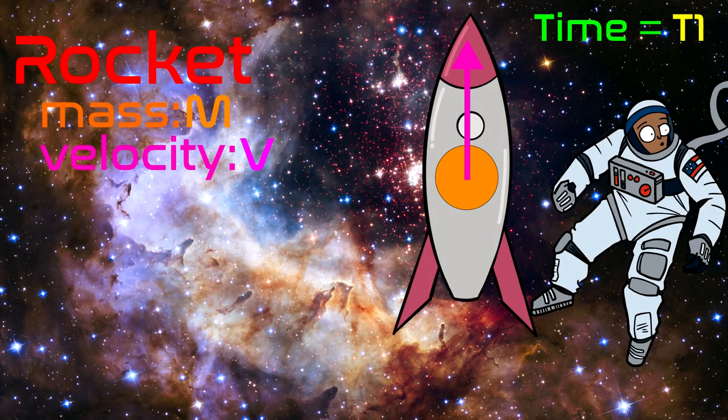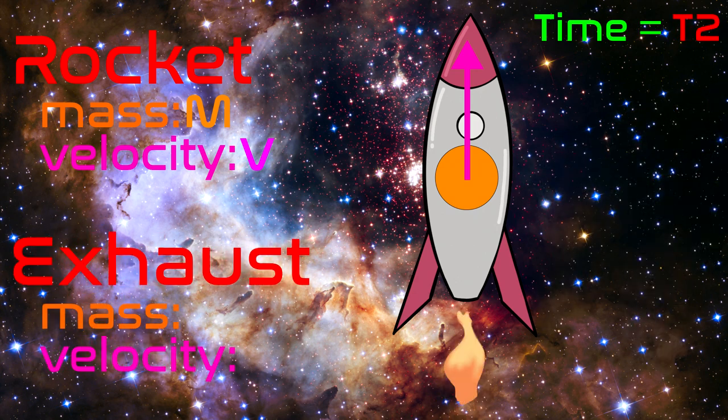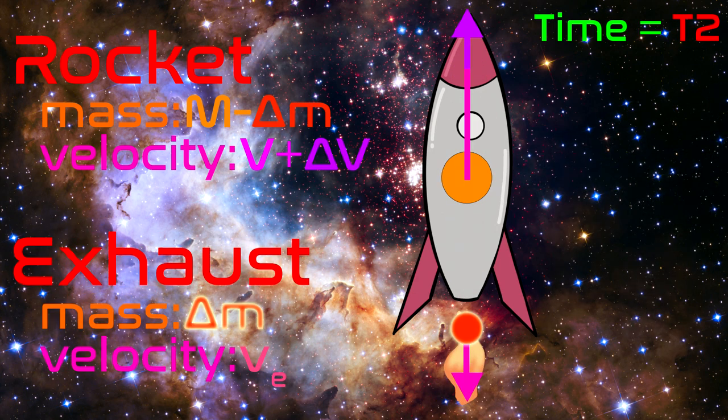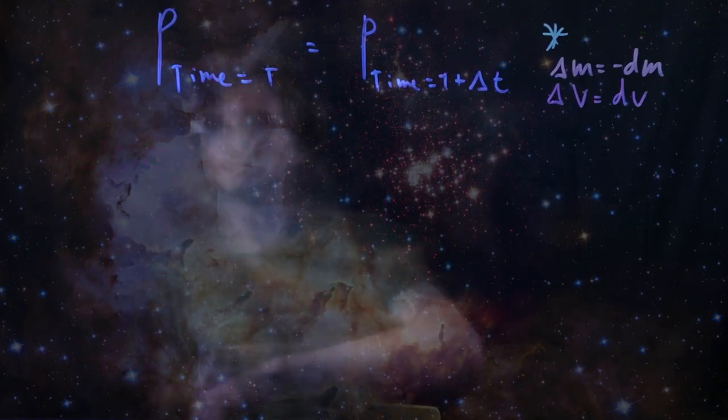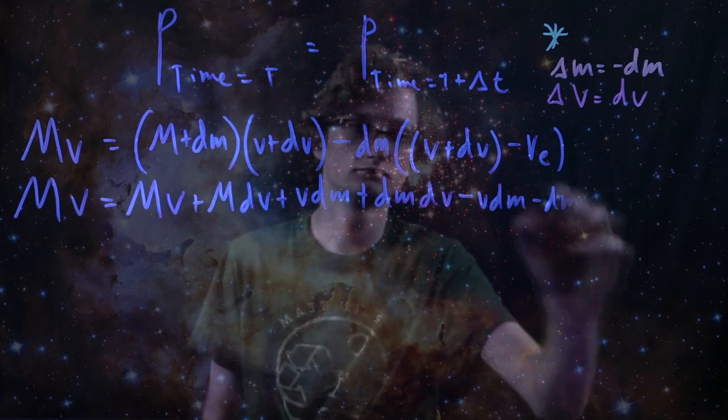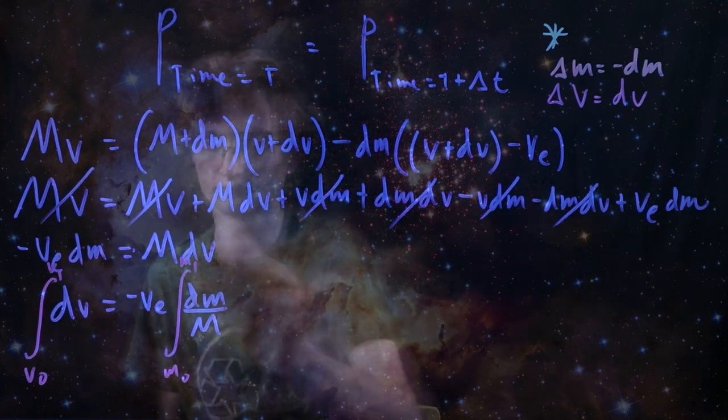Let's consider our rocket relative to an outside observer. After some time, the rocket has burned fuel, ejecting some mass delta M at a particular exhaust velocity VE relative to the rocket. The mass inside the rocket has decreased while the rocket's velocity has increased. Since momentum is conserved relative to the observer, we can write the fundamental equation for how our rocket works.